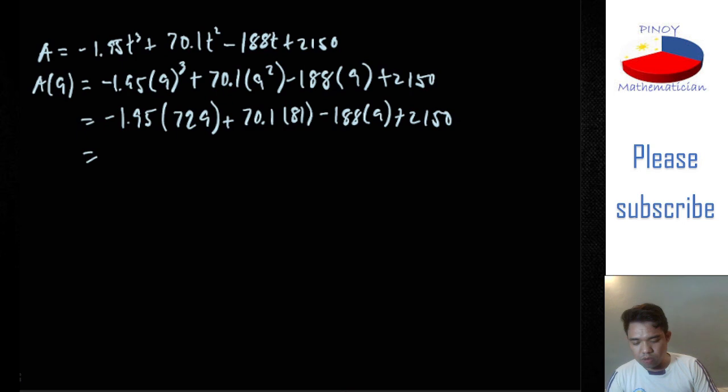9 times 9, plus 70.1 times 9, minus 188 times 9, plus 2,150. And then we are going to multiply.